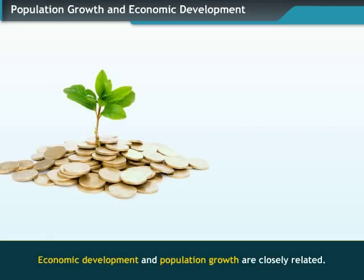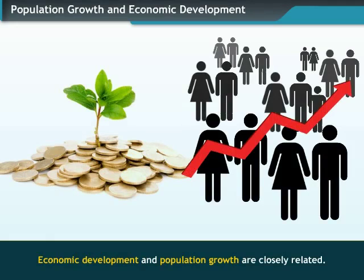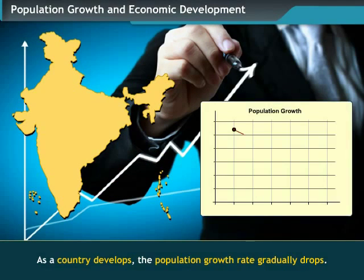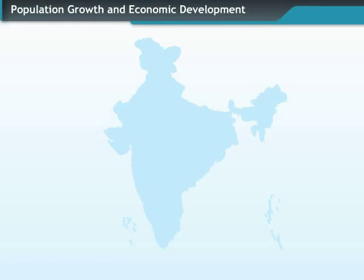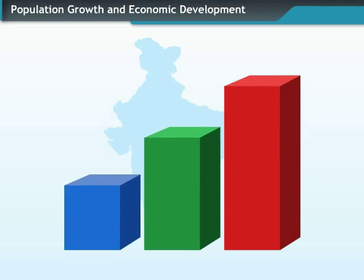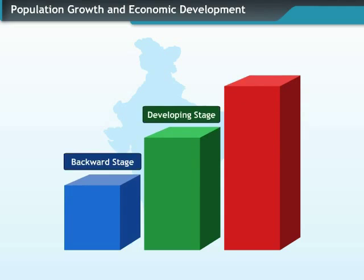Economic Development and Population Growth are closely related. As a country develops, its population growth rate gradually drops. A country passes through three stages of economic development: the Backward Stage, the Developing Stage, and the Developed Stage.